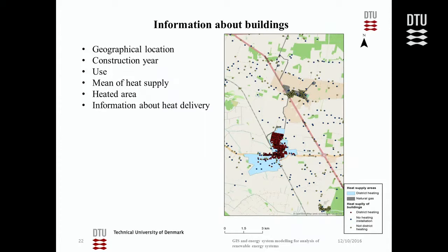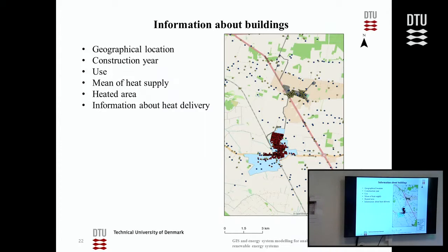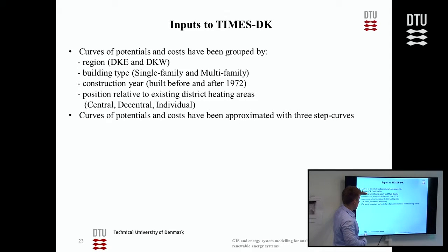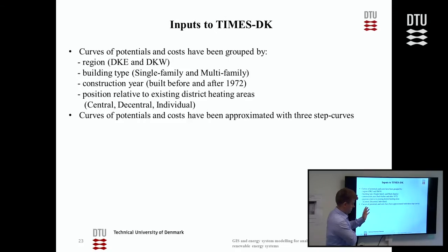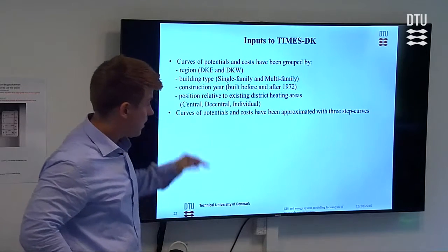Going back: one building in GIS is one point with all this data. What is fed into TIMES-DK? The approximated curves of potentials and costs are grouped by region — East and West Denmark — building type (two residential types: single-family and multi-family), construction period (before and after 1972), and position relative to existing district heating areas: central, decentral, and individual. Individual is of course a group of individual buildings, not a district heating area. These potentials and costs are approximated with three steps.